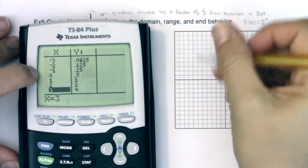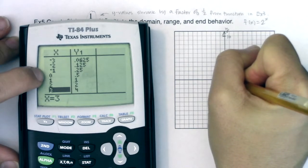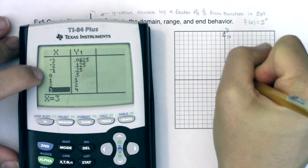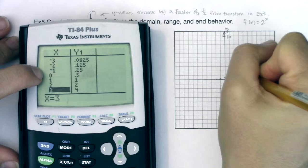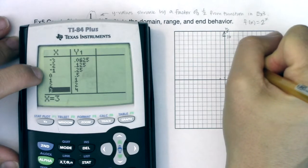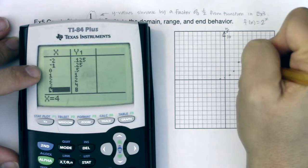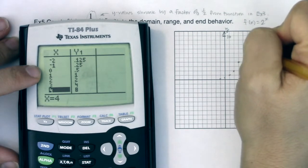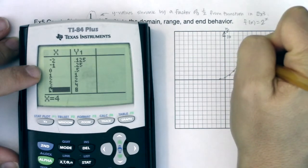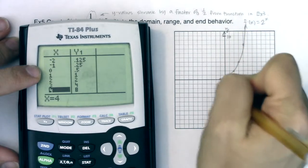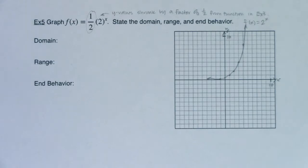Okay, so it looks like I have negative 1, 0.25. I have 0, 0.5. I have 1, 1. I have 2, 2. I have 3, 4. And I bet I have 4, 8. Yeah. There we go. And I can see my horizontal asymptote in there, so let me graph it.